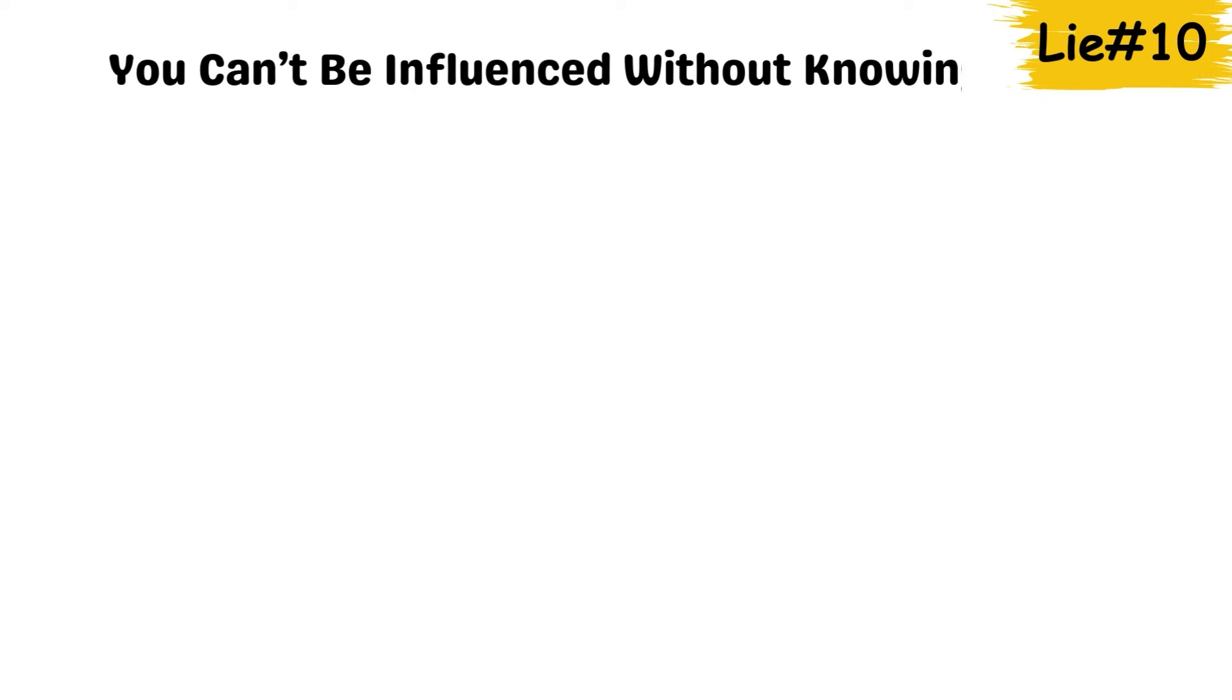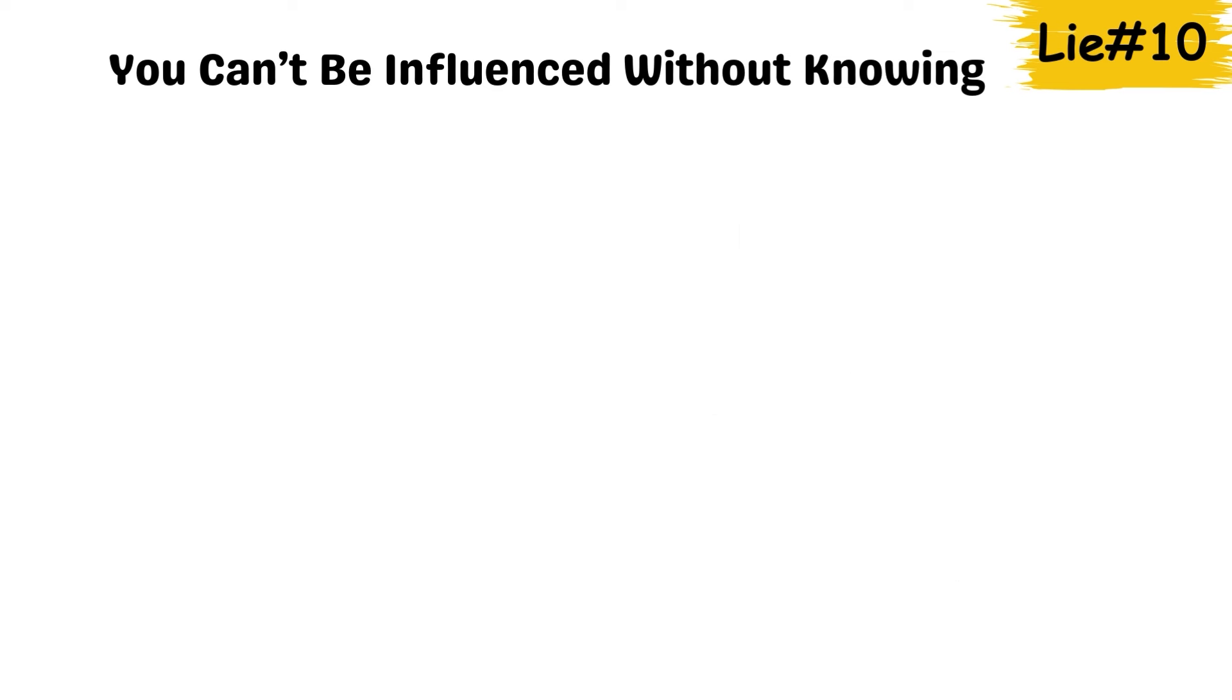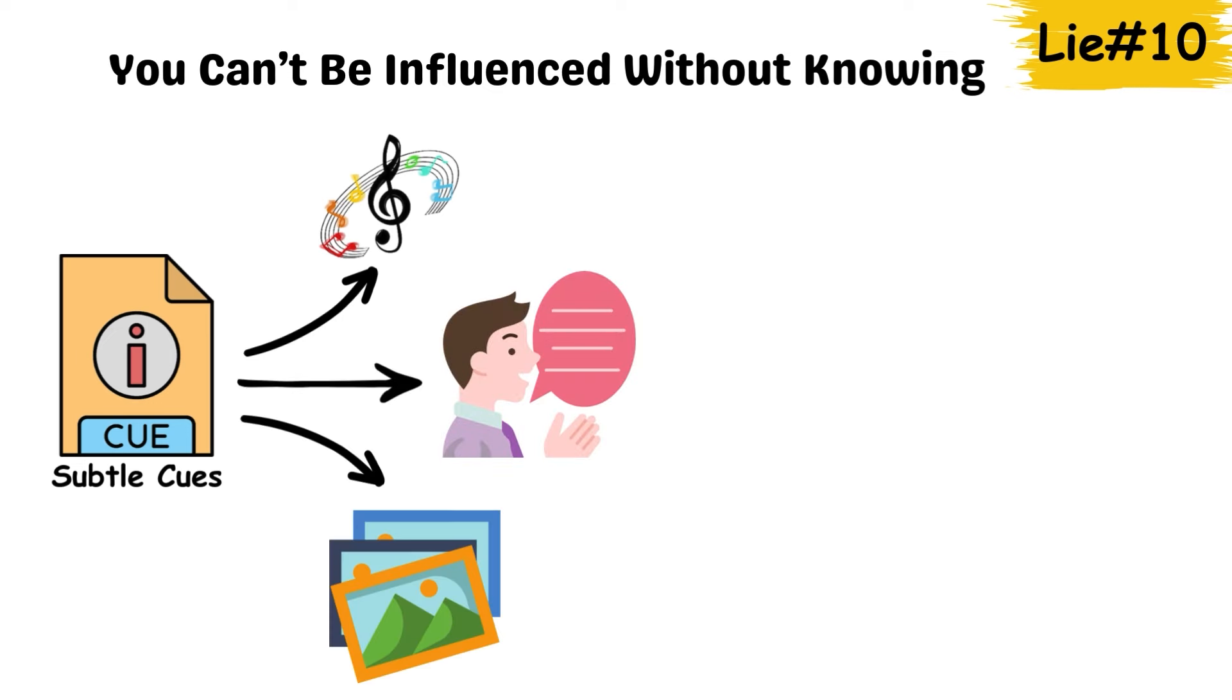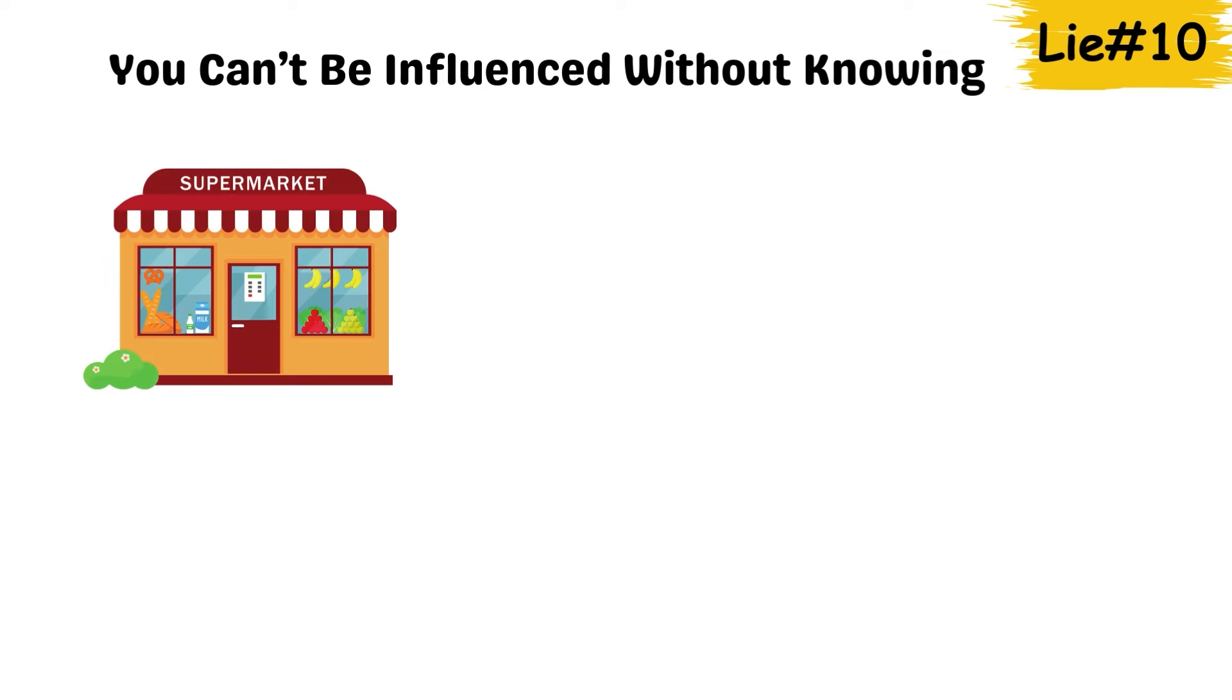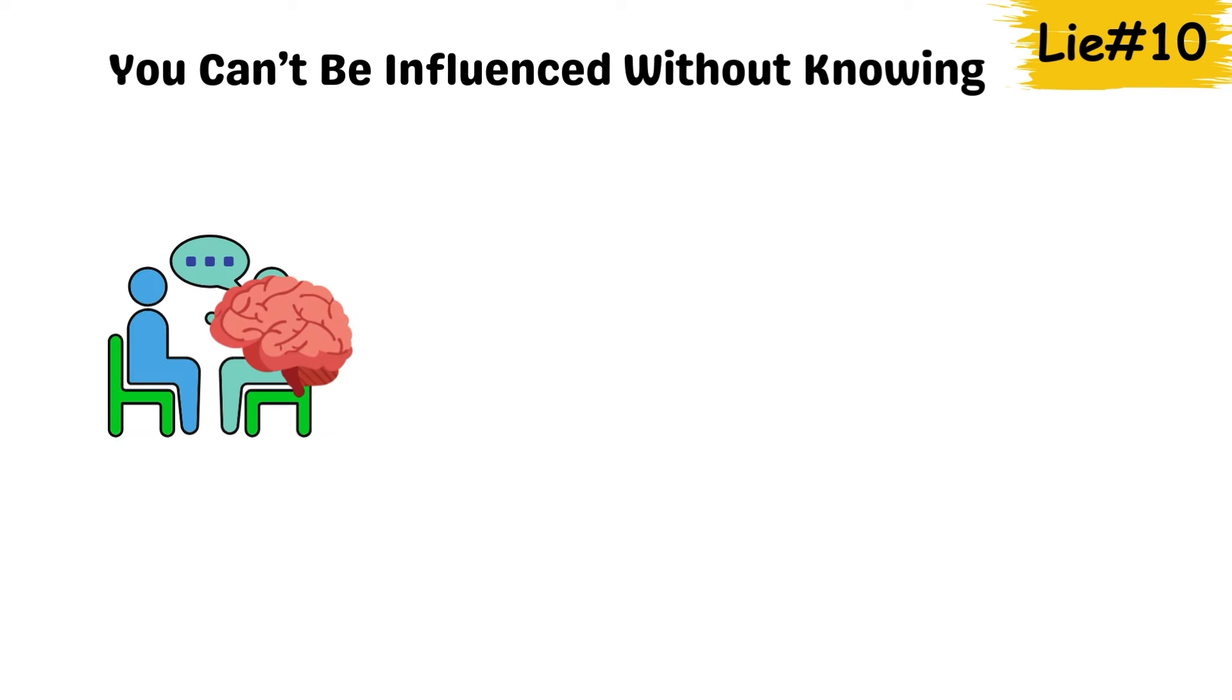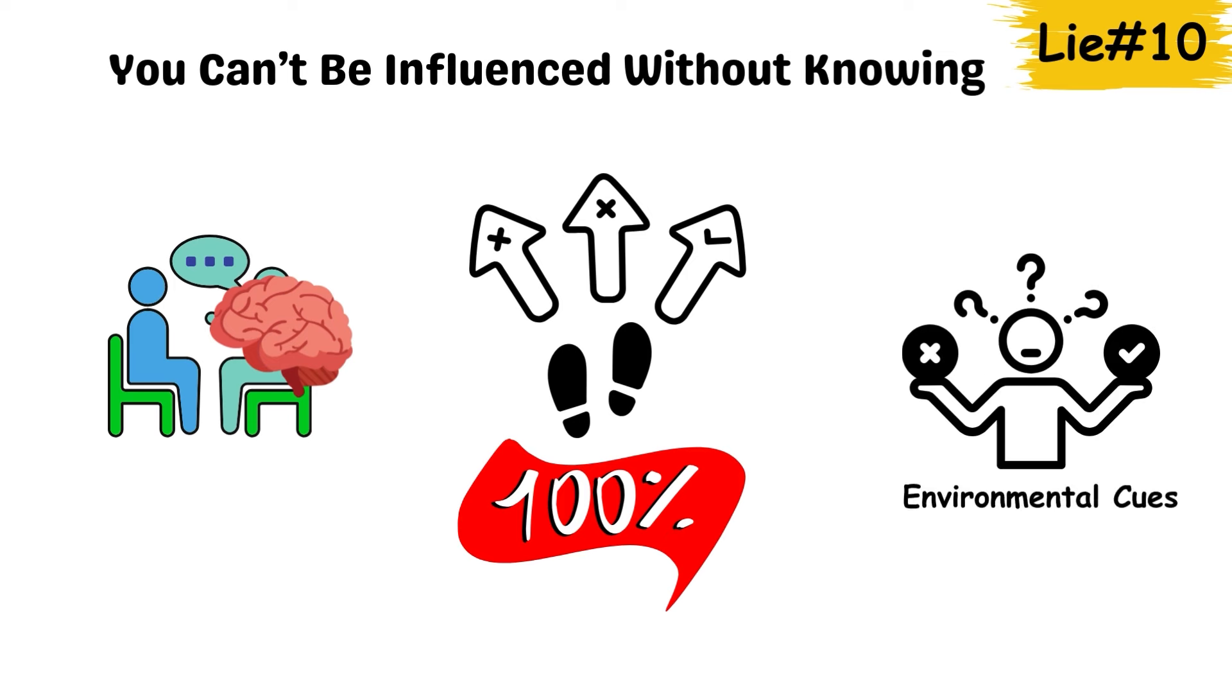Lie 10. You can't be influenced without knowing. Many people believe they're immune to influence, especially when they're aware of it. But studies show that even subtle cues, like background music, certain words, or images, can influence your mood and choices without your conscious awareness. Supermarkets, for example, often play specific music to encourage slower shopping, leading you to buy more. Your brain may convince you that your choices are entirely yours, but you're often swayed by environmental cues without even noticing.